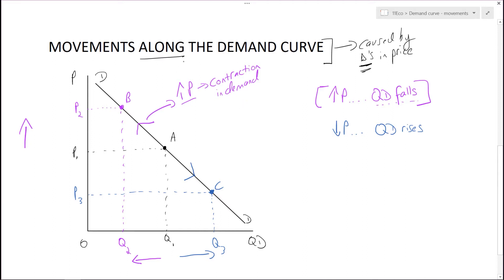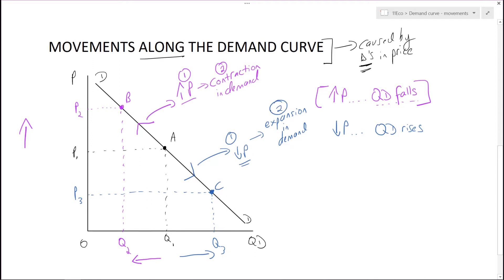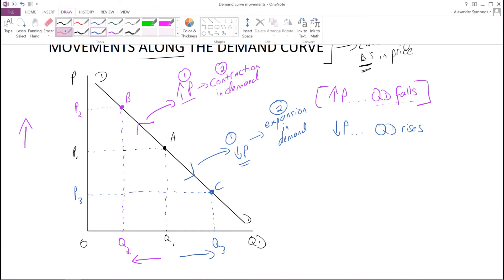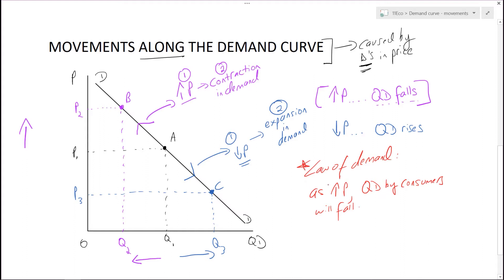So: number one, there's an increase in price; number two, we get a contraction in demand. And flipping to the other situation: price falls, and that leads to an expansion in demand. A decline in price leads to an expansion in demand. These two things really make sense in terms of the law of demand — that as price rises, the quantity demanded by consumers will fall. So this describes our movements along the demand curve, caused by changes in price.